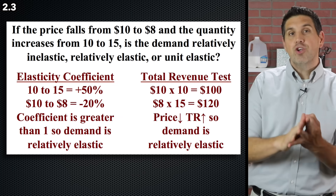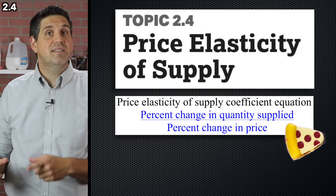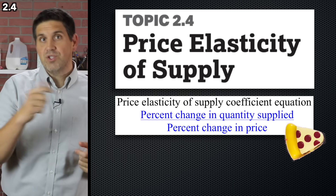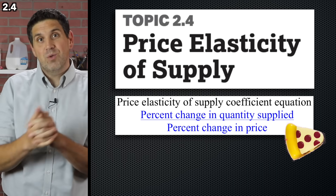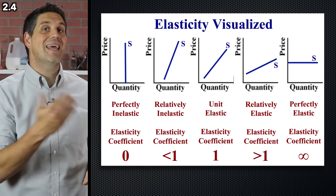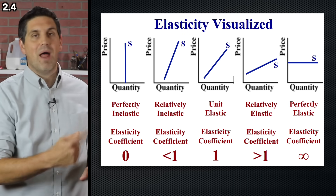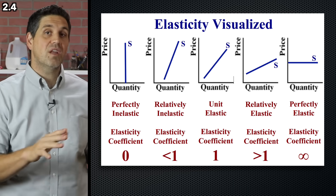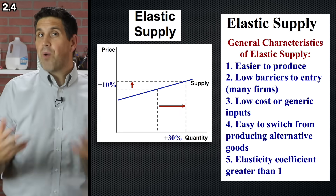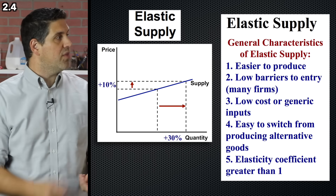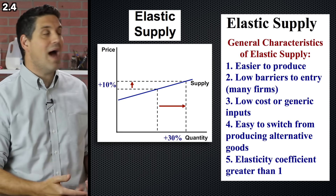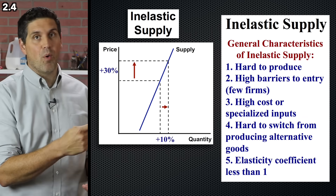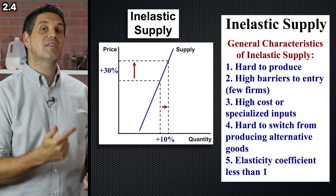Topic 2.4 is elasticity of supply — much of the same as elasticity of demand, but instead of quantity demanded, we're looking at how sensitive quantity supplied is to a change in price. Vertical is perfectly inelastic supply, then relatively inelastic, unit elastic, relatively elastic, and perfectly elastic supply. Unlike demand, the cause has to do with production. If a product is easy to produce and resources are available, elastic supply. If it's hard to produce and takes a lot of time, then quantity supplied increases only a little — relatively inelastic supply.